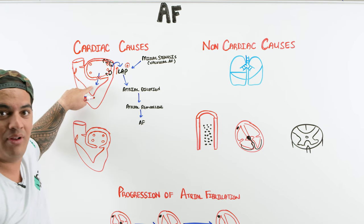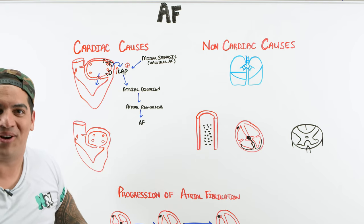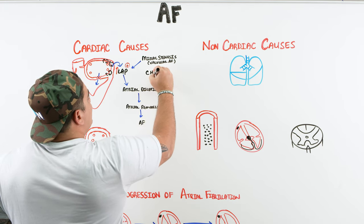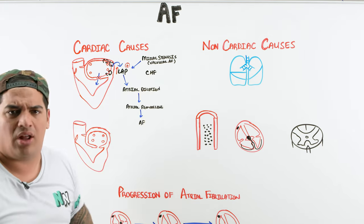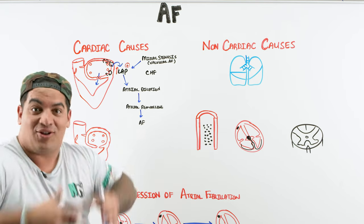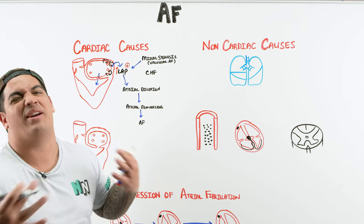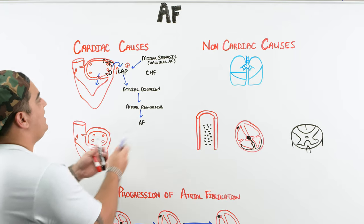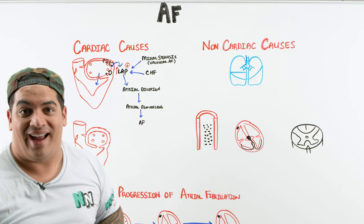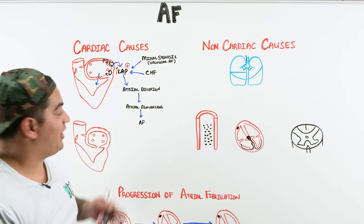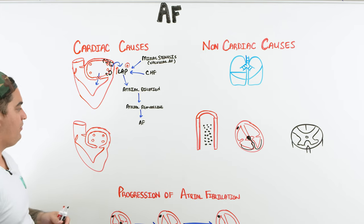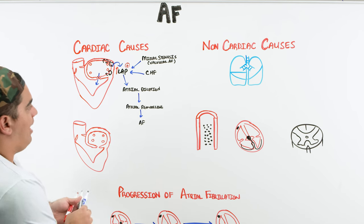Another cause of elevated left atrial pressure is CHF, particularly diastolic heart failure. Because the left ventricle is so congested and filled with blood, it's hard to accept more blood. Systolic heart failure also contributes. CHF causes high left atrial pressures, atrial dilation, electrical remodeling, and then AFib — these are really important ones to remember.